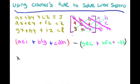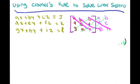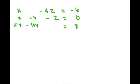To find x, we replace the x-variable column with the constants j, k, l, then do the same diagonal multiplication with that matrix and divide by the determinant of the coefficient matrix. This takes some time, so I'll show you how to find x only and you can find y and z on your own. I'll post the answers at the end so you can check your work.